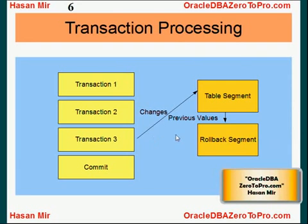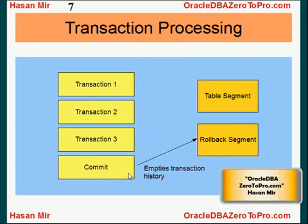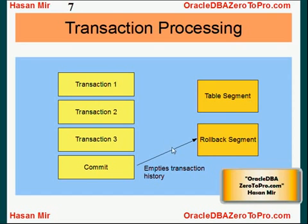At this point the user can issue a commit command or a rollback command. If the user issues a commit command, Oracle knows that whatever information has been stored in the rollback segment is no longer needed, because we won't be rolling back the work. So Oracle empties the transaction history from the rollback segment and the changes are marked as finalized in the actual table.